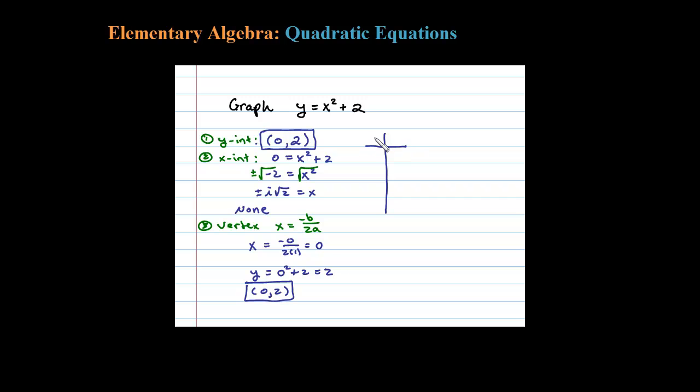Let's go ahead and make a chart of values and get a couple more. Let's say we have x = -1, we already know if we plug in 0 we'll get 2, and let's look at what happens when x is 1.